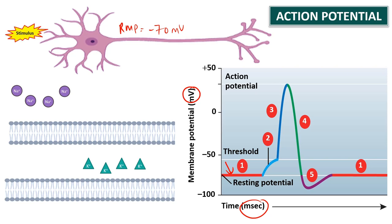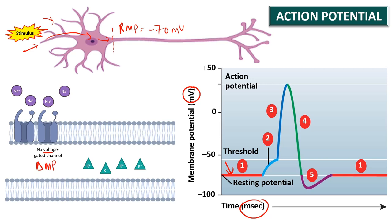Now the neuron receives a stimulus. The stimulus is received by the dendrites, then moves toward the soma and triggers a local current that depolarizes the axon membrane. This causes the opening of sodium voltage-gated channels. These channels open because, as the name implies, they are voltage-gated — they open when there is a change in membrane potential due to the stimulus. When these channels open, sodium that is at high concentration on the outside starts to enter into the cell, carrying positive charge and depolarizing the membrane.